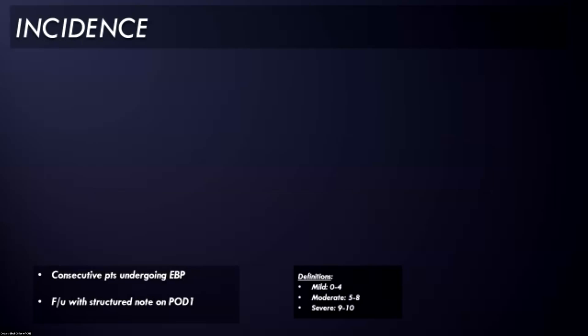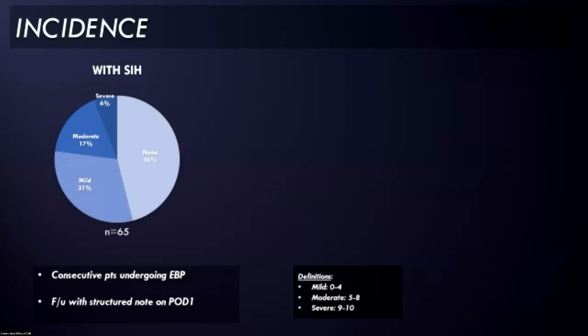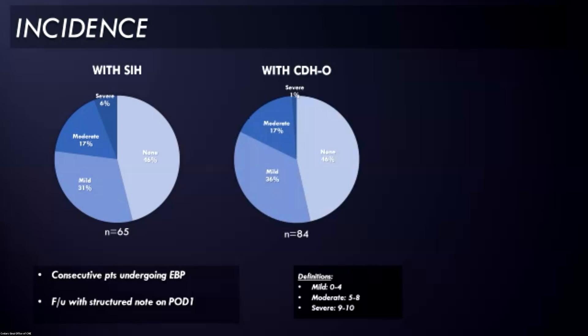We graded their headache severity as either mild, zero to four, moderate five to eight, or severe, nine or 10. And what you can see is that in patients with SIH, about a little over 50% of patients had some level of rebound intracranial hypertension. But it was only about 20 or 25% of patients that had moderate or greater headaches. So a lot of patients would have mild, very transient symptoms that would resolve by the next morning and really require no treatment other than head elevation and maybe some Tylenol.